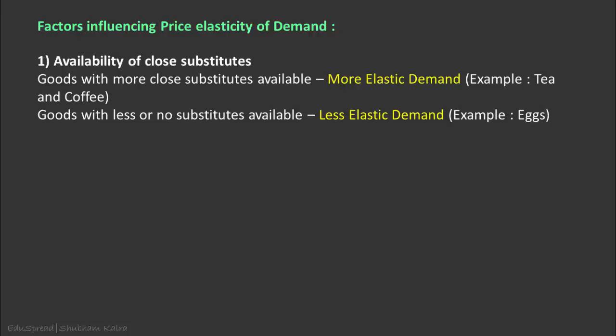The first factor is availability of close substitutes. If a good has more close substitutes available, then it is easier for consumers to switch from that good to other goods if the price of the good rises. These types of goods tend to have more elastic demand as compared to goods with fewer or no substitutes available.